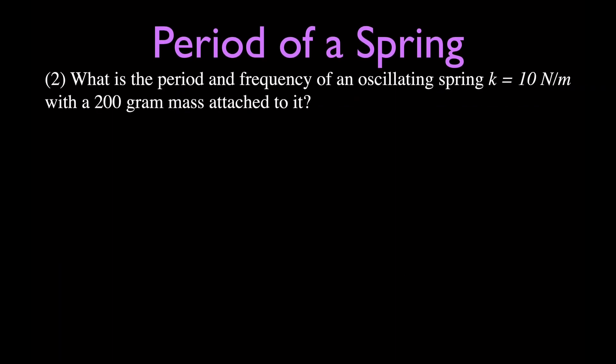Problem two asks: what is the period and frequency of an oscillating spring? The spring constant k equals 10 newtons per meter, and the mass is 200 grams. We're going to calculate the period first using the equation for the period of a simple harmonic spring: T equals 2π times the square root of m divided by k, where m is the mass and k is the spring constant.